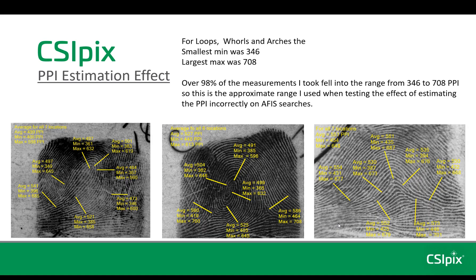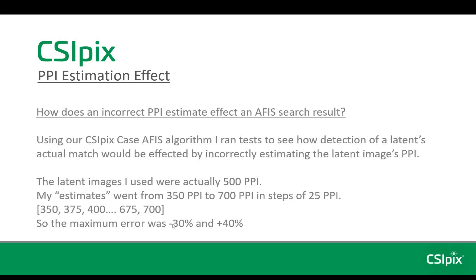In my previous video, I showed the results of PPI estimates made using ridge spacing at different locations on fingerprints depending on pattern types. I used 55 examples of each pattern type to make the estimates. Essentially, the smallest PPI estimate was 346 and the largest PPI was 708. Using our CSIPICS case APHIS algorithm, I ran tests to see how detection of a latent's actual match would be affected by incorrectly estimating the latent image's PPI. The latent images I used were actually 500 PPI, and my estimates went from 350 to 700 in steps of 25. The maximum errors were minus 30% up to 40%, which reflected the actual estimates I made in the previous research.